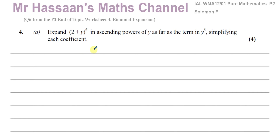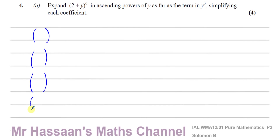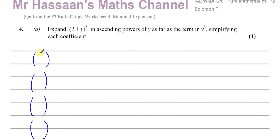The easiest way to do this in P2 work is to use our NCR method. We're going to have terms up to y cubed: the y^0 term, y^1 term, y^2 term, and y^3 term. You're going to have NCR, where N is the power — which is 6 — and R starts at 0 and keeps going up by 1: so 6C0, 6C1, 6C2, and 6C3.